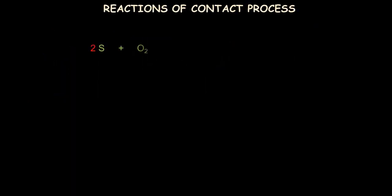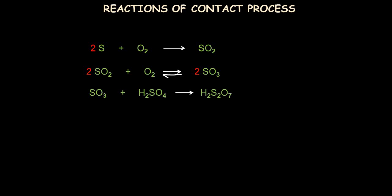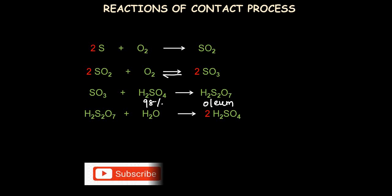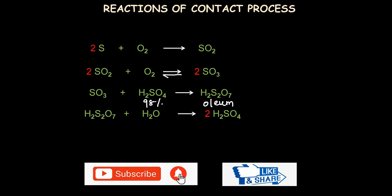The key reactions of the contact process are: (1) S + O₂ → SO₂ (combustion of sulfur); (2) 2SO₂ + O₂ ⇌ 2SO₃ (equilibrium oxidation in the converter); (3) SO₃ + H₂SO₄(98%) → H₂S₂O₇ (formation of oleum in the absorber); and (4) H₂S₂O₇ + H₂O → H₂SO₄ (dilution of oleum to give sulfuric acid). This is how the contact process is used to make sulfuric acid, one of the most important chemicals worldwide.